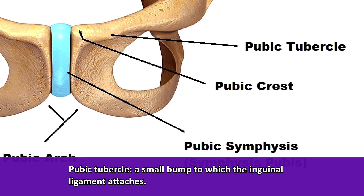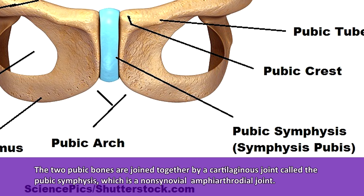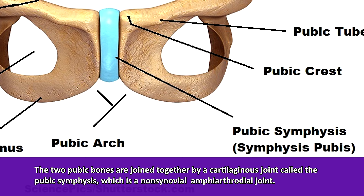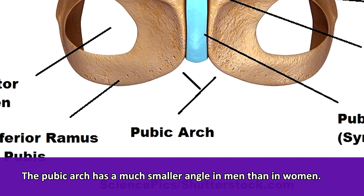The two pubic bones are joined together on the anterior side of the pelvis by a cartilaginous joint called the pubic symphysis or symphysis pubis, which is a non-synovial amphiarthrodial joint. Directly underneath the pubic symphysis, the bones form an arch or notch resembling an upside-down V called the pubic arch. It has a much smaller angle in men than in women — a comparison of the male and female pelvis, as well as the true and false pelvis, will be covered in a future video.